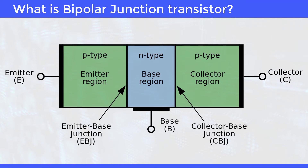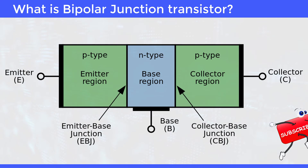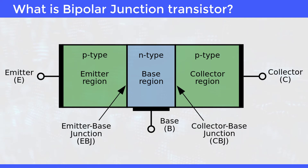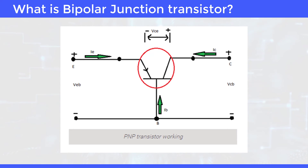In the PNP Transistor, the middle region — that is, the base — is of N-type, and the two outer regions — that is, collector and emitter — are of P-type. Similar to the NPN Transistor, it also operates in active mode. The majority charge carriers are holes of the P-type emitter. For these holes, the base-emitter junction will be forward biased and they move towards the base region, causing the emitter current IE.